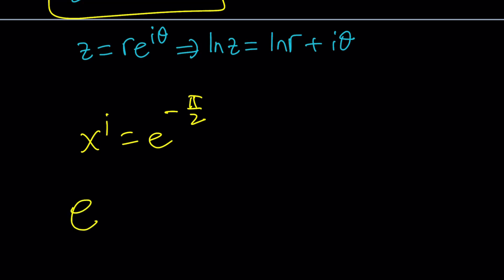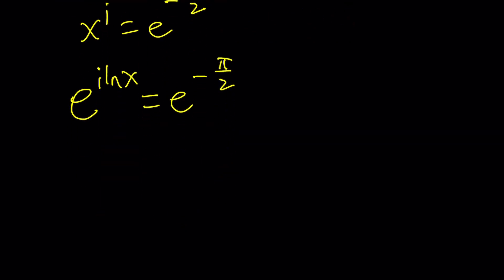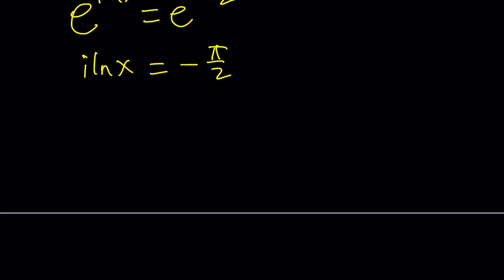you get e^(i ln x), right? And that equals e^(-π/2). After this, the solution is fairly easy. All you have to do is take ln of both sides and come up with i ln x = -π/2. From here, we can solve for x.